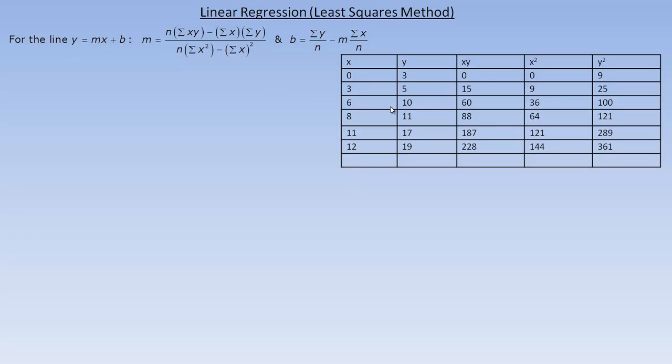Now, we need all these sums. These are the x values. I'm going to add 0, 3, 6, 8, 11, and 12. Down here, I'll put what's called the sum of the x values. If I add all those up, I'll get 40. This means that's the Greek letter sigma, and it stands for the sum of, in this case, all the x's. Next, I'm going to sum all the y's. I'm going to add 3, 5, 11, 10, 17, and 19. The sum of all the y's is 65.